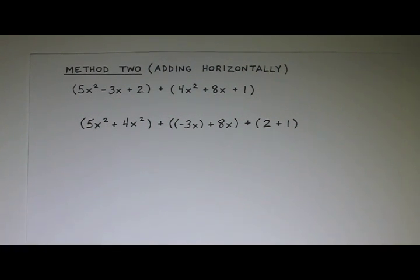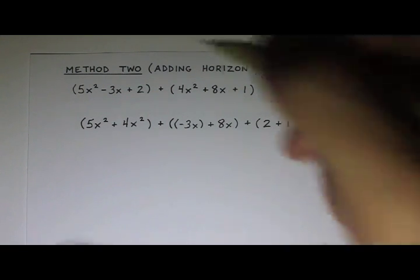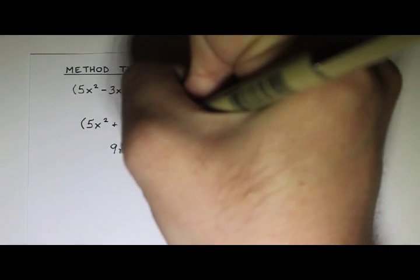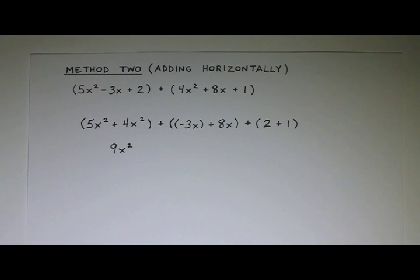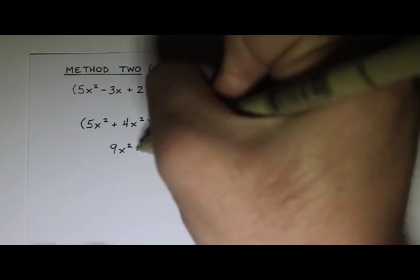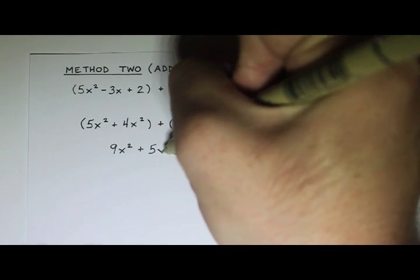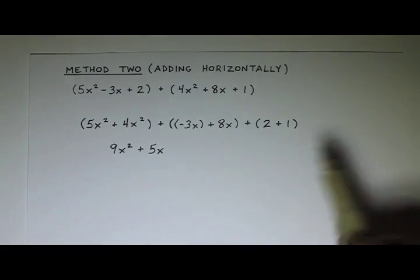So now I'm just going to add the things that are together in parentheses. So 5x squared plus 4x squared. That's 9x squared. And then negative 3x plus 8x. That's positive 5x. And then 2 plus 1. That's 3.